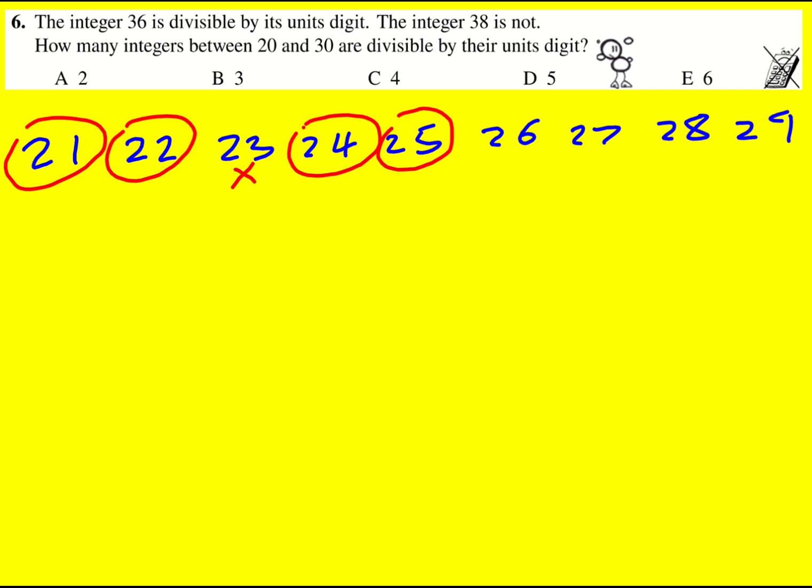28 is not divisible by 8. It's 14 times 2, or 7 times 4. And then 29 is not divisible by 9. So just checking them, we see that 4 are possible.